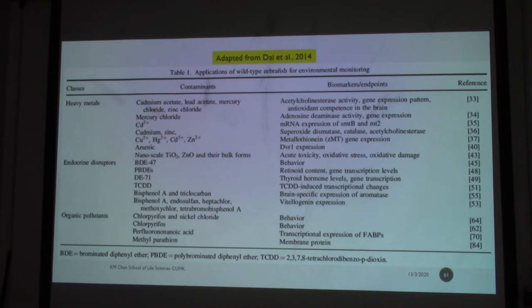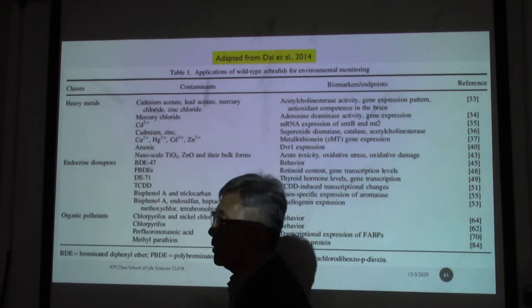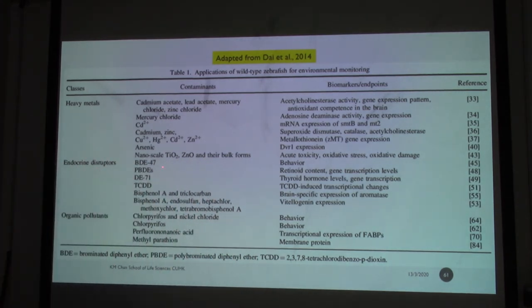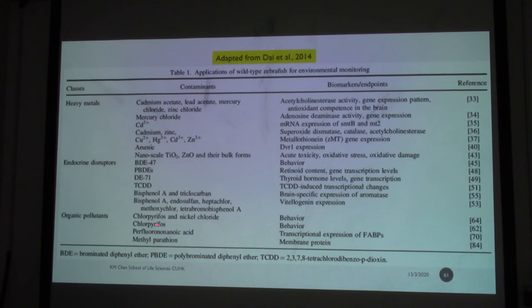A whole list of different chemicals has been reviewed in a research paper from 2014. These chemicals include heavy metals like copper, zinc, cadmium, lead, and mercury, as well as endocrine disruptors like BDE-47 — which is less toxic than BDE-99 — and dioxin. Also aromatic estrogens, triclosan, triclcarbon, spinosad, pesticides, organic pollutants, copepherols, and nickel chloride. You can see the different biomarkers and endpoints used for gene expression studies.